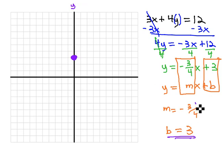Now that we have a point, we can use the slope, which is rise over run, or rise negative 3, run 4, to get our next point.